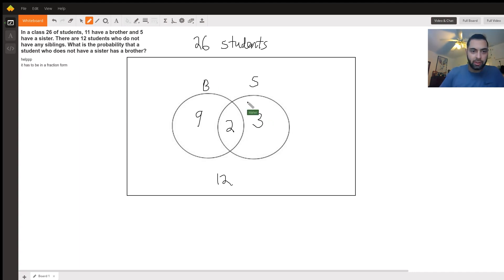Now, let's go back to the question. What is the probability that a student who does not have a sister has a brother? So a student who does not have a sister has a brother. In order to solve this one, we have to find out how many students total do not have a sister.